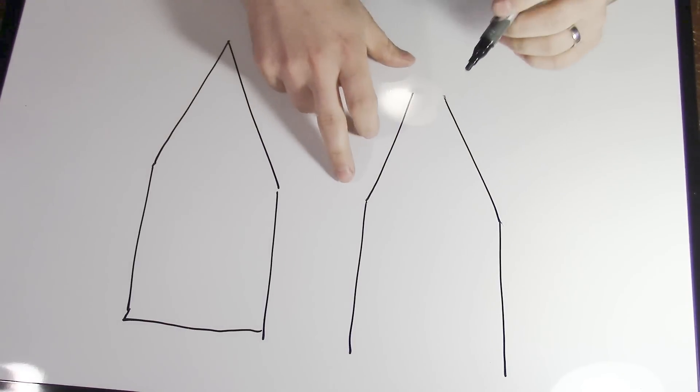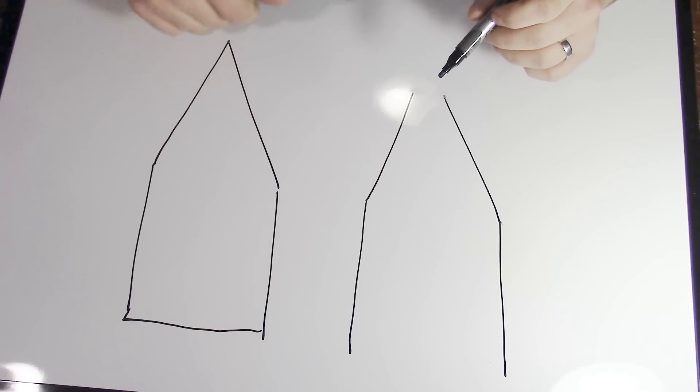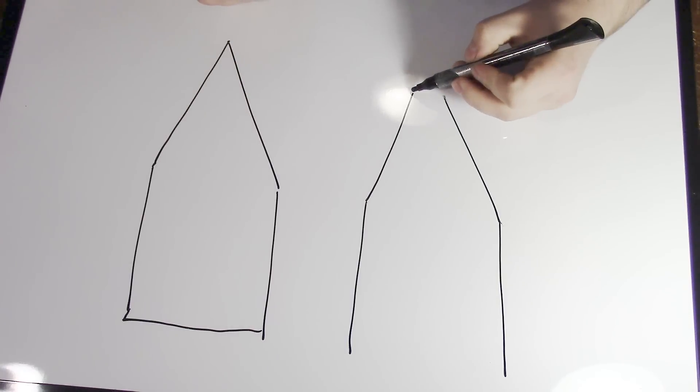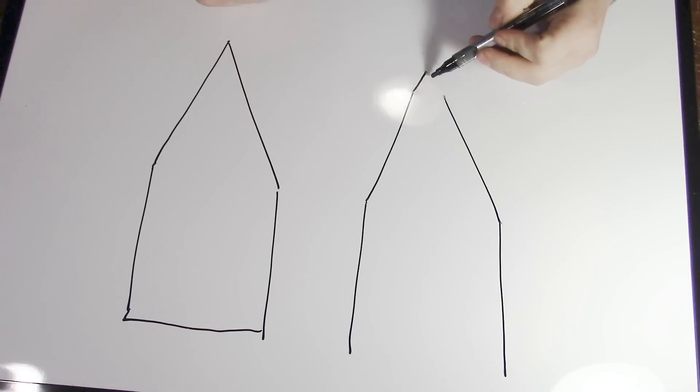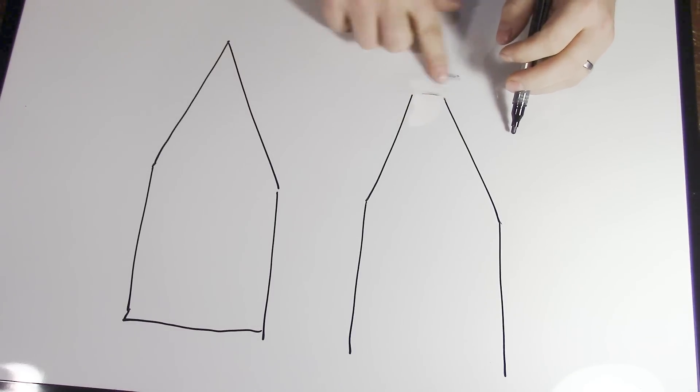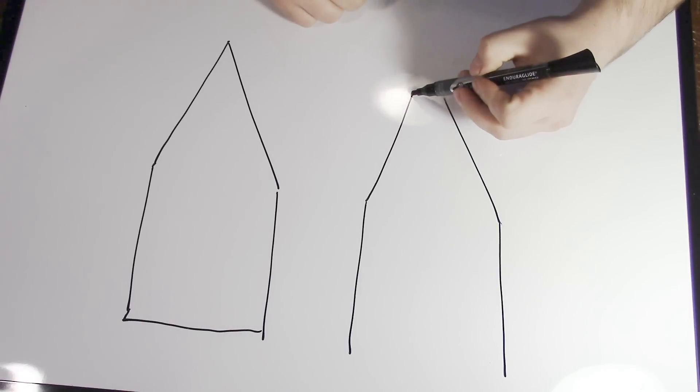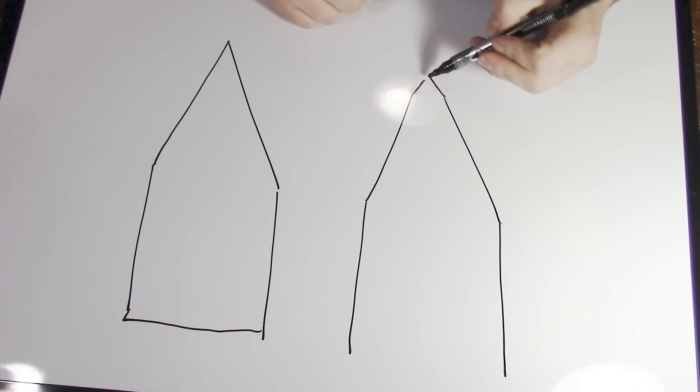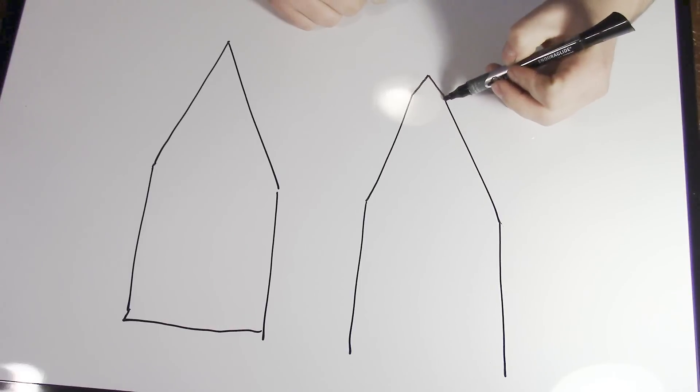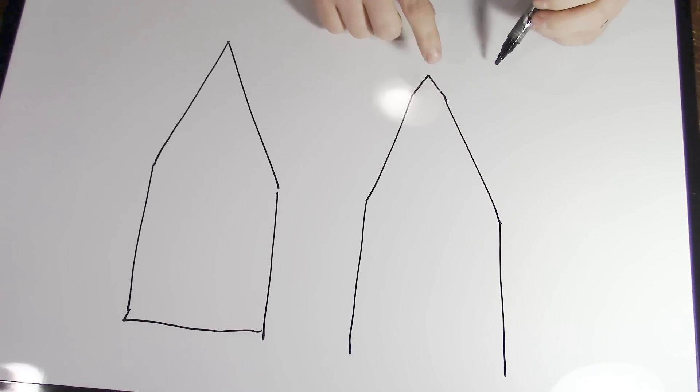A Sabre grind will have a similar grind to the Scandi, but right at the edge it'll have a small secondary bevel at a slightly steepened angle. So this is your cutting edge with the Sabre grind.